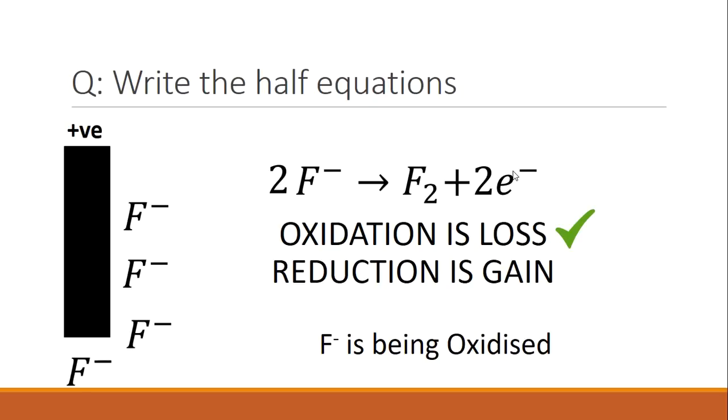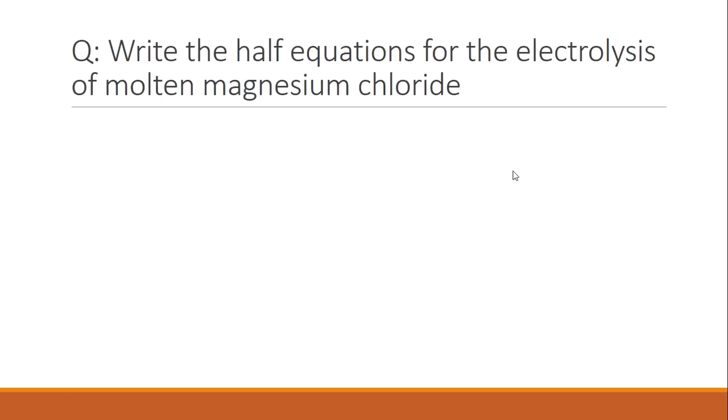We've looked at two examples. We're now going to do another example where we put the two of them together and do a more exam level question. We're going to write the half equations for the electrolysis of molten magnesium chloride. We have MgCl2, and it's going to be molten. Let's see how it will split up in terms of ions. The magnesium is going to become Mg2+ because magnesium is in group two of the periodic table. And then we're going to get Cl− because chlorine is in group seven.